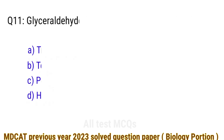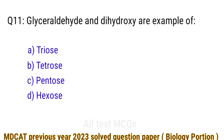Question number 11. Glyceraldehyde and dihydroxyacetone are examples of? The right answer is option A: triose.